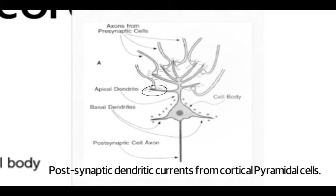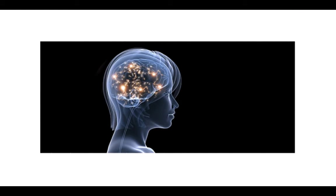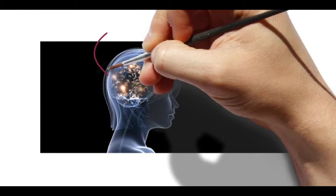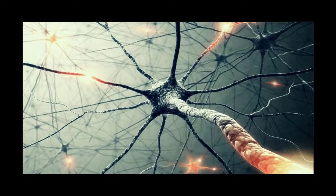It's the postsynaptic dendritic currents from the cortical pyramidal cells. The activity from one single neuron is way too small to be detected with EEG equipment. But when thousands, or tens of thousands of neurons work in concert, we're in business.